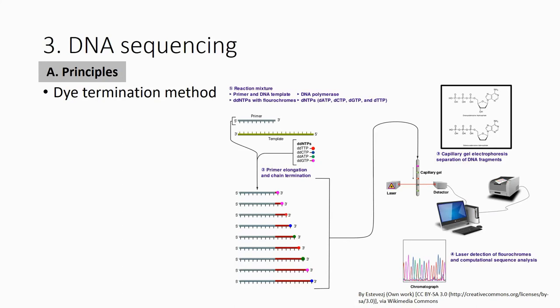That is the reason why someone invented the dye termination method. The only difference is that when they do the reaction, they put all the normal dNTPs and all four ddNTPs together — ddATP, ddTTP, ddCTP, ddGTP — the modified ones. And for each ddNTP, they label it with a fluorescent molecule. When exposed to a laser, each label appears in a different color, so A, T, C, G each show a different color.